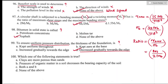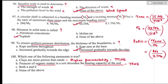Question number one hundred: which statement is true? Clay is more porous than sand due to its higher porosity factor — this is a true statement. Also, the presence of organic matter in soil decreases the bearing capacity — this is also true. Both option A and option B are correct. The right answer is option C — both A and B.